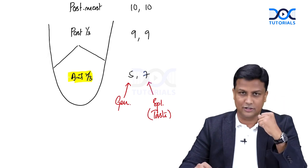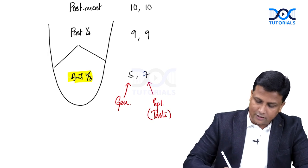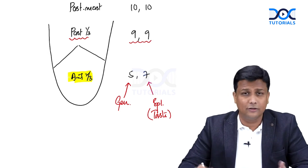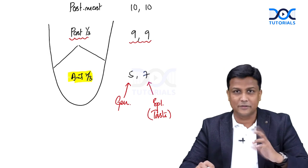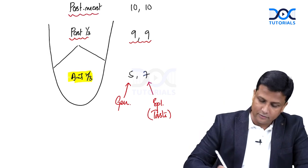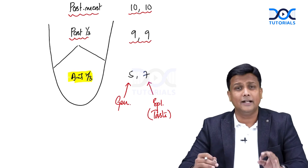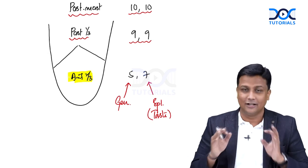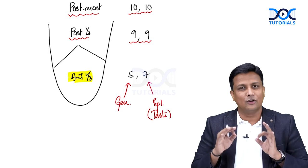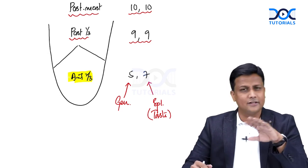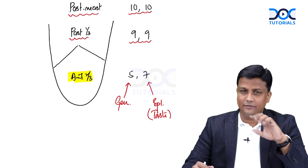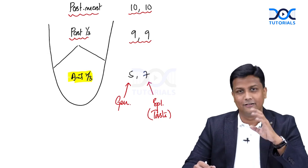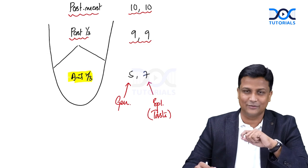No need to worry about the posterior one-third and posterior-most part, because for the posterior one-third, both general and special sensation are carried by the ninth nerve — glossopharyngeal. For the posterior-most part of the tongue, both general and special sensation are carried by the tenth nerve — your vagus nerve. There is no confusion there. So just remember: 5-7-9-9-10-10.